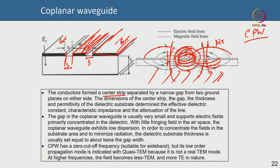The center strip is separated by a small narrow gap on both sides from two ground pads — this is the ground-signal-ground (GSG) configuration. The spacing between the ground pads, the substrate thickness h, the pad dimensions, and the dielectric constant of the substrate are all critical in determining the line impedance.